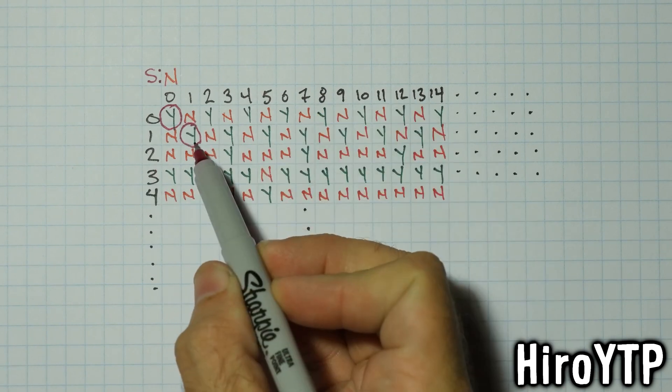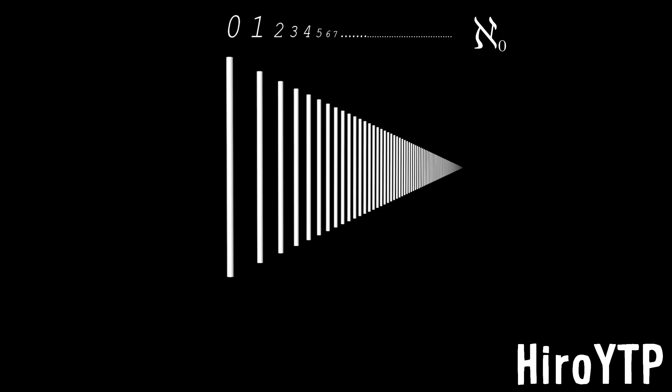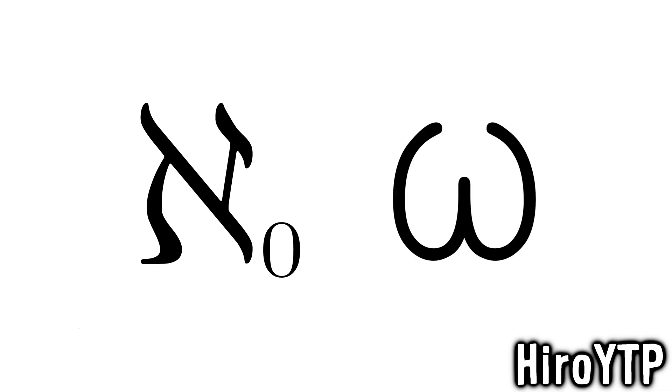First: 0, 1 — 2nd: 1, 2 — 3rd: 1, 1. Aleph null, 1, 1 — aleph null, omega number 1, aleph null, omega numbers 1. Omega, omega.